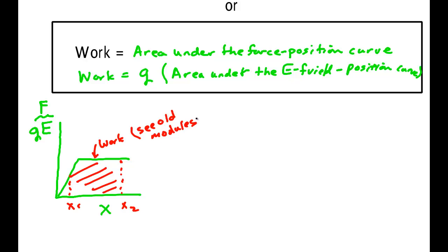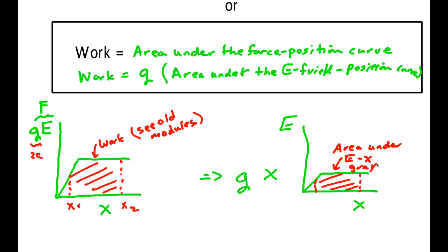So go back and look up the old modules on work if you forgot this. But here's the thing. This Q is like a number, maybe it's two coulombs. And all it's doing is just changing the height of this graph. So we could factor that out and say this is Q times this graph. And that graph would look the same, except its height would be changed. And we could find the area under this graph, say from here to here, and then multiply that by Q.